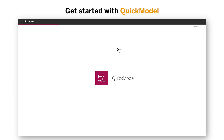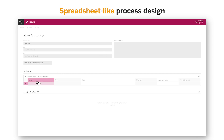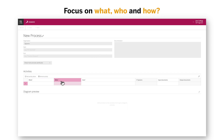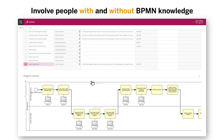You can get started by using Quickmodel. It offers a spreadsheet-like process design that allows you to focus on the three most basic questions: what, who, and how. As part of SAP SIGNAVIO Process Manager, it is a tool that can be used to involve people without prior BPMN knowledge in the creation of your process landscape. But it can also help seasoned BPMN modelers to speed up the modeling process and gain faster alignment on new anticipated processes.